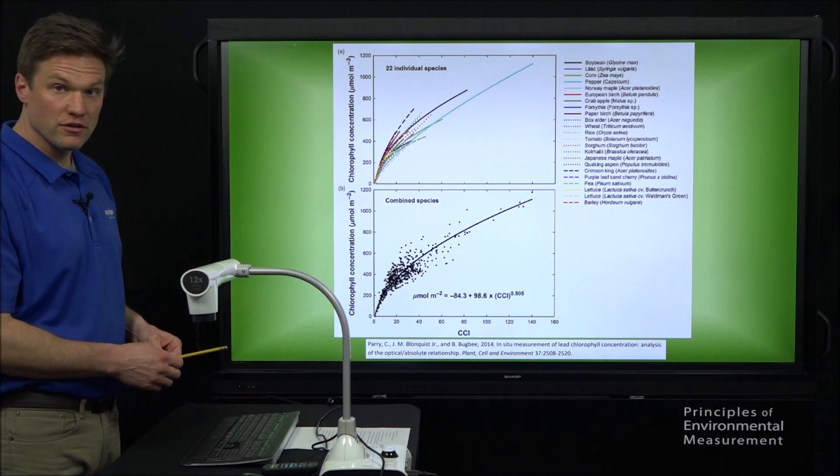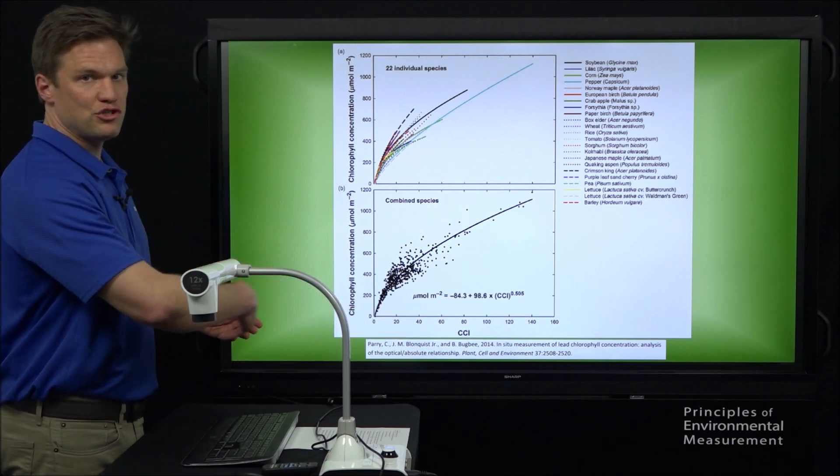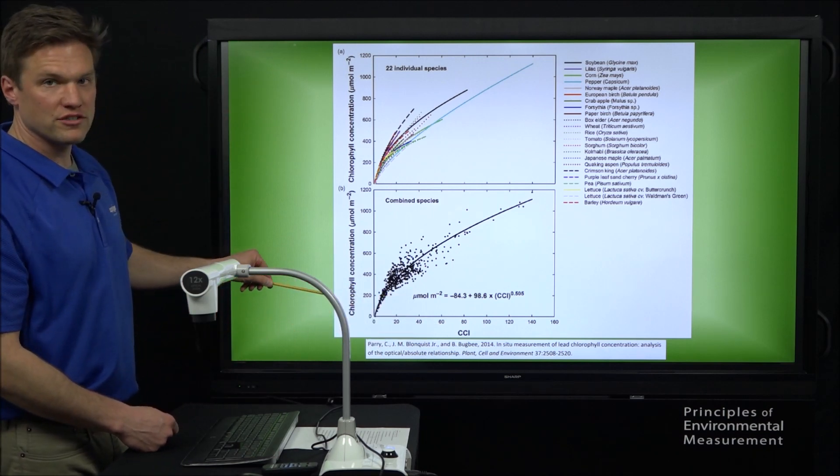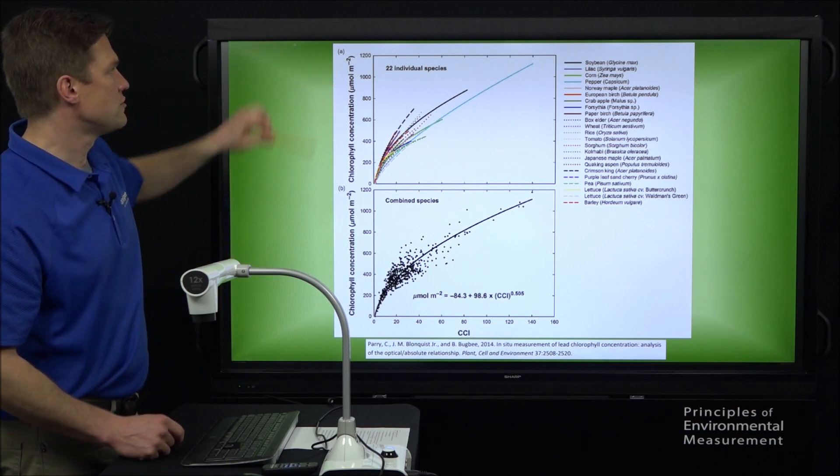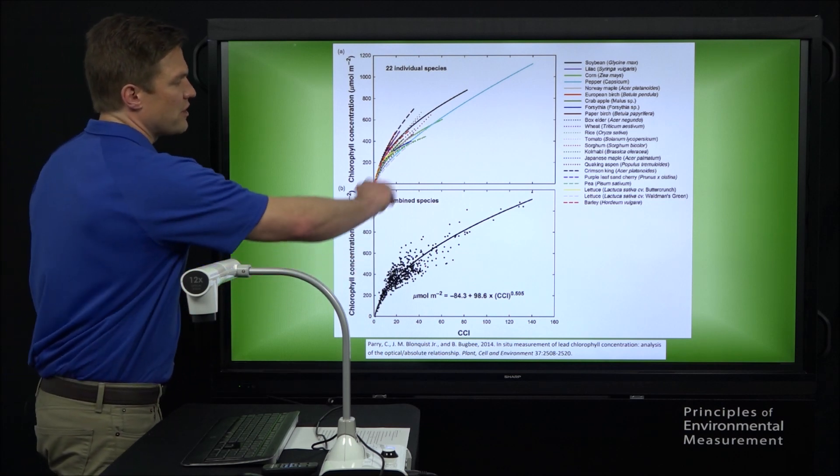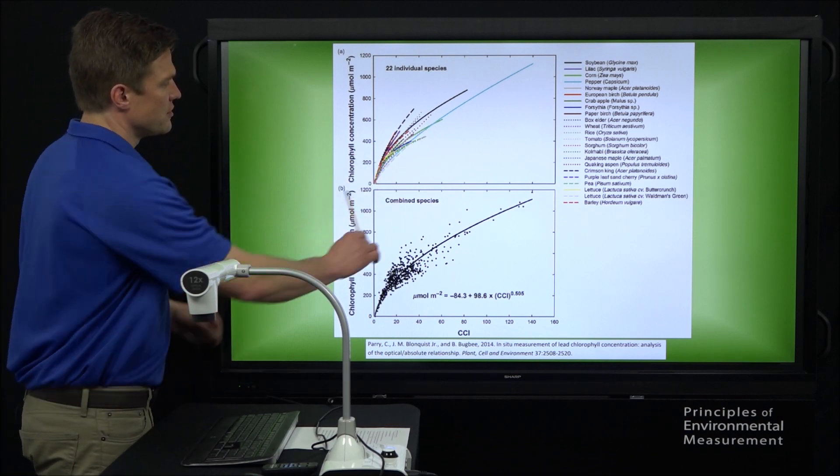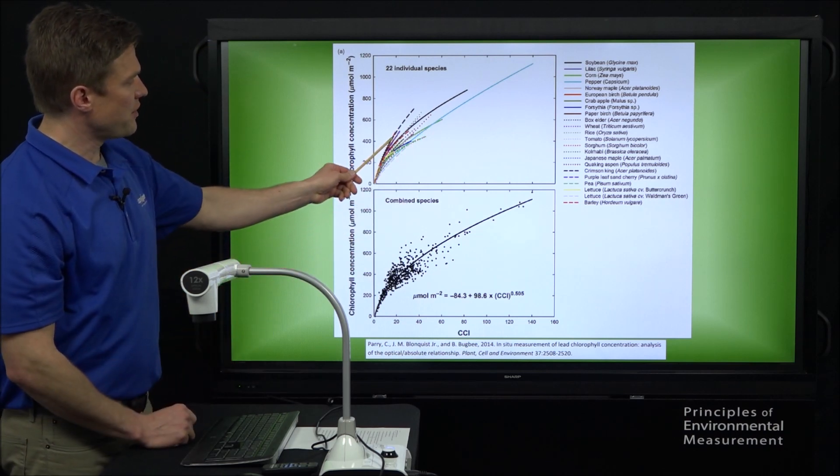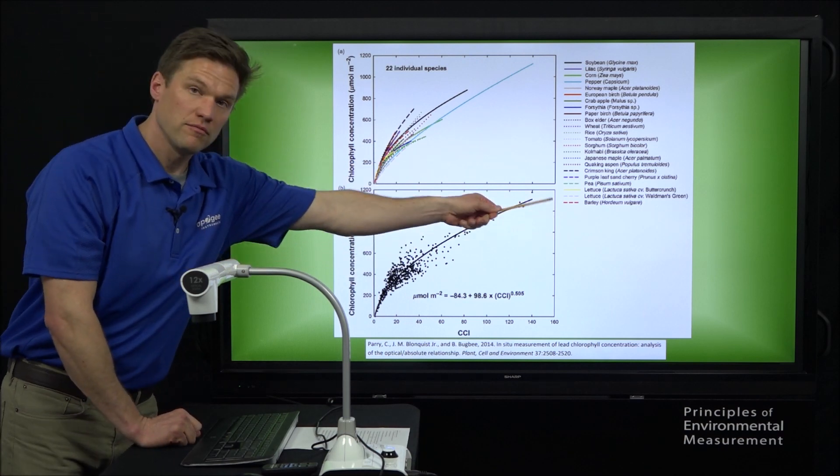Here's a brief look at the results of their paper. On the x-axis, we have the CCI values, those unitless values. On the y-axis, we have chlorophyll concentration measurements in absolute values of micromoles per meter squared. You can see that there's a positive relationship, but it's not perfectly linear. There's a little bit of a curve to it, and there's a little bit of difference depending on the species that you're using. Each of these different colored lines correlates to a different type of plant.